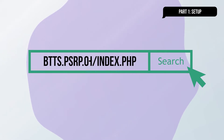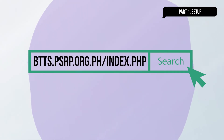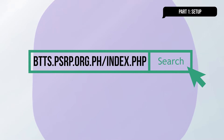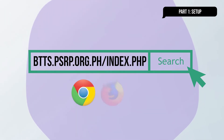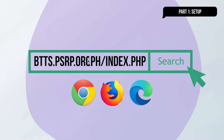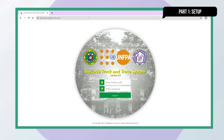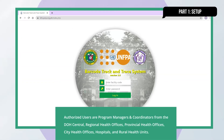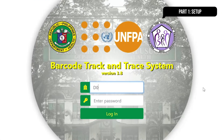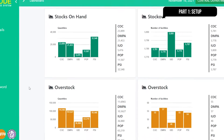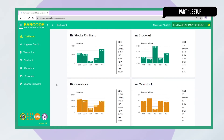First, we need an account. Go to btts.psrp.org.ph/index.php from a Google Chrome, Firefox, or Edge web browser. If you're an authorized user, a facility code and a default password will be provided for you to log in. Once you're logged in, you will be taken to the dashboard.